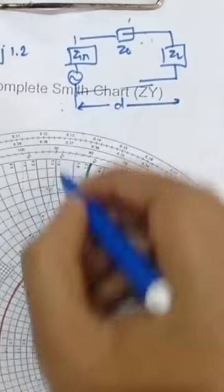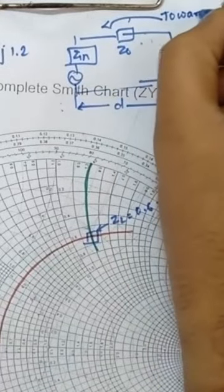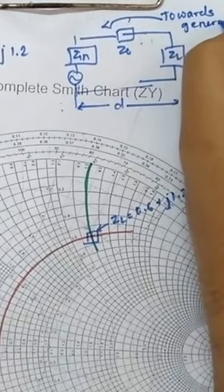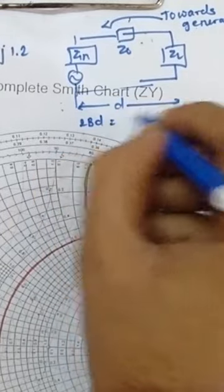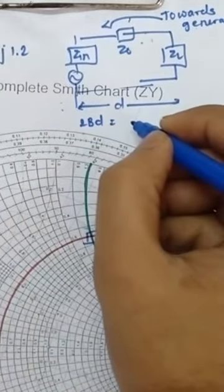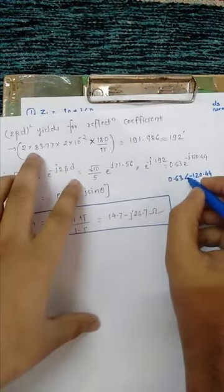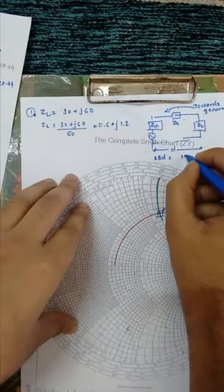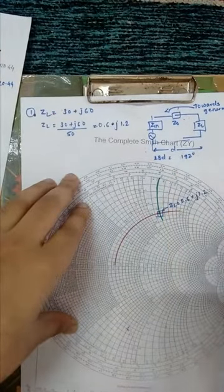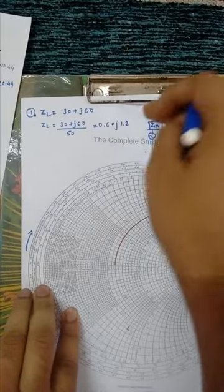We are given the length of the transmission line, and we need to move towards the generator. We calculate 2βd, which equals 192 degrees. On the Smith Chart, we move 192 degrees in the 'wavelength towards generator' direction, starting from the load point ZL.